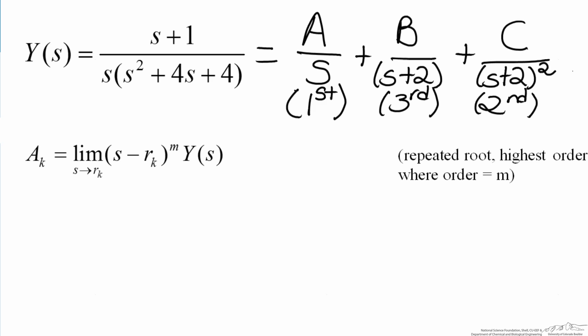Now we will solve for C. C, if you recall, corresponded to the second equation, which represented the term which goes with the repeated root of highest order. So here, r sub k, note the functional form here, it's s minus r sub k, and we have in C, s plus 2. So therefore, for both of our cases here, r sub k will equal negative 2.